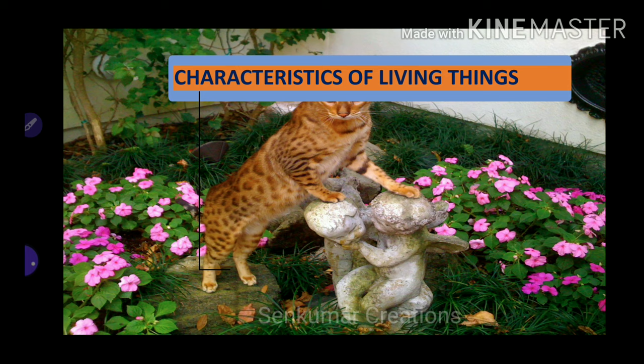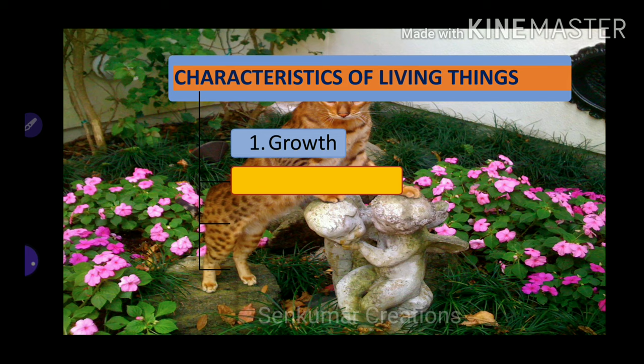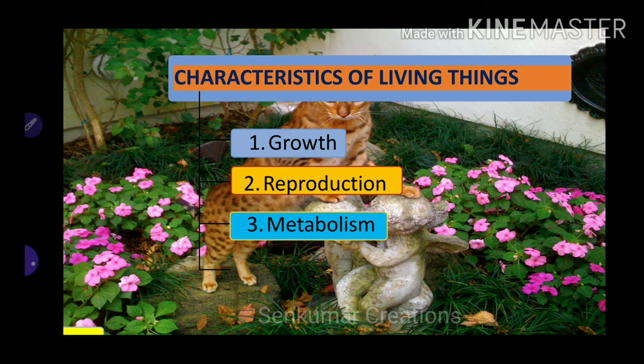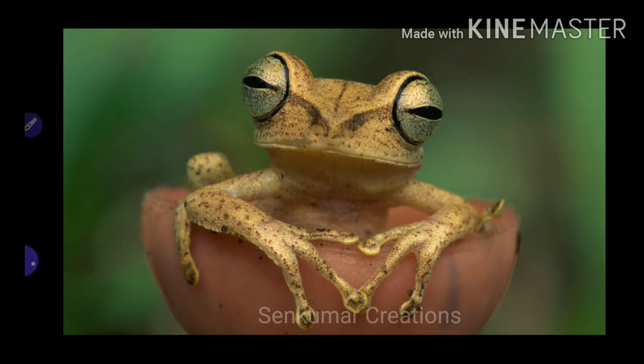We can see the characteristic features of living things. The first one is growth, the second is reproduction, next is metabolism, and response to stimuli.